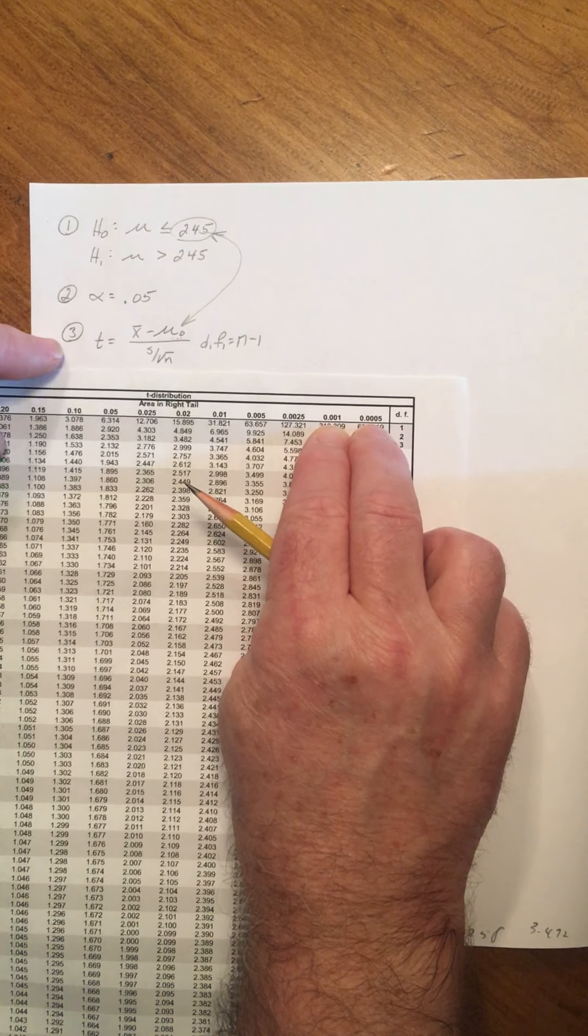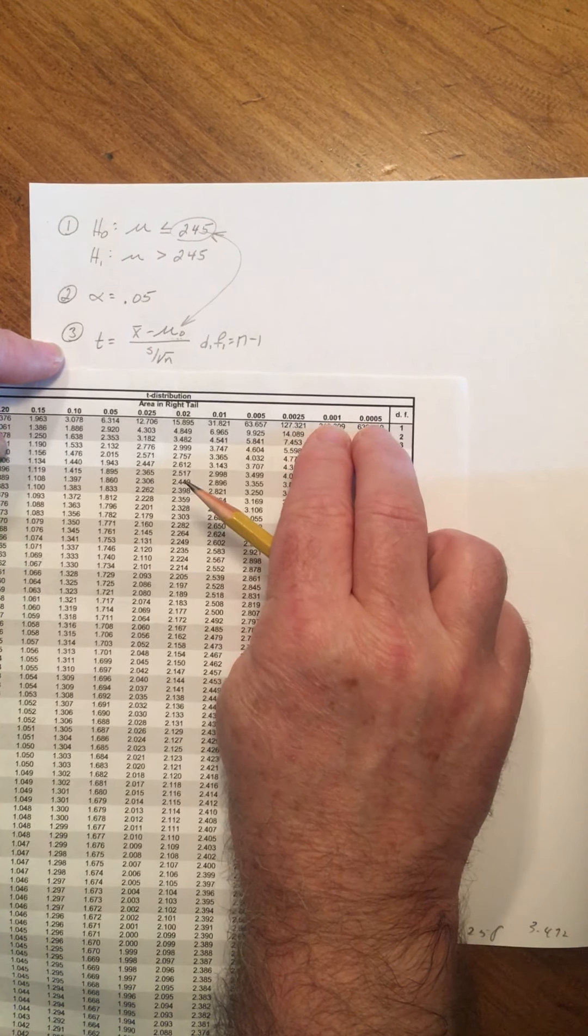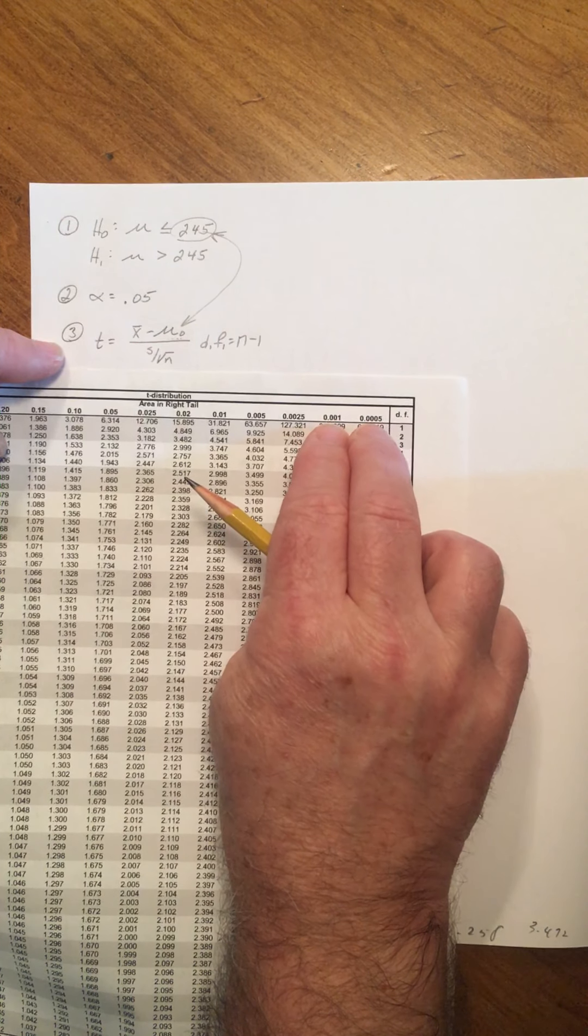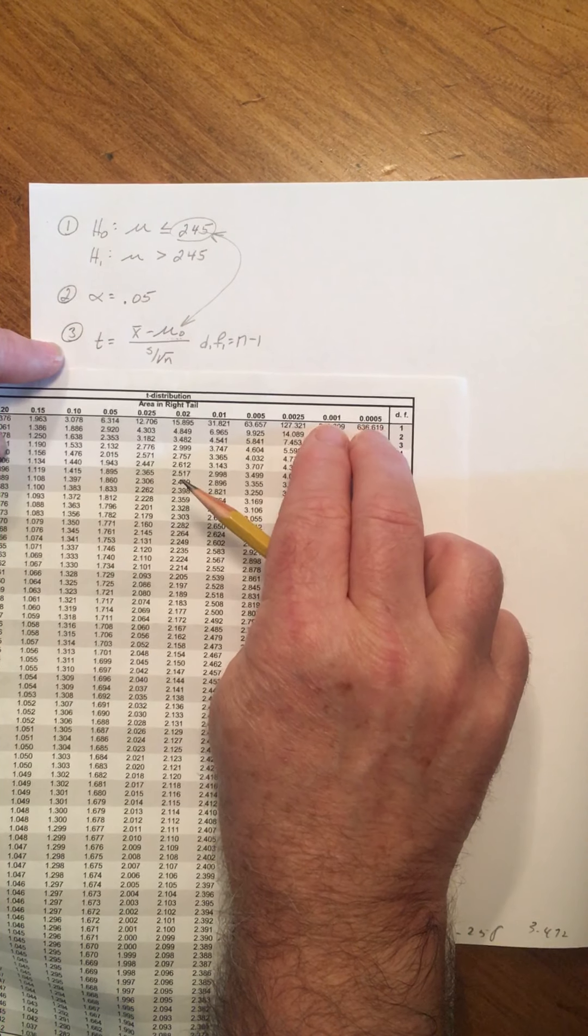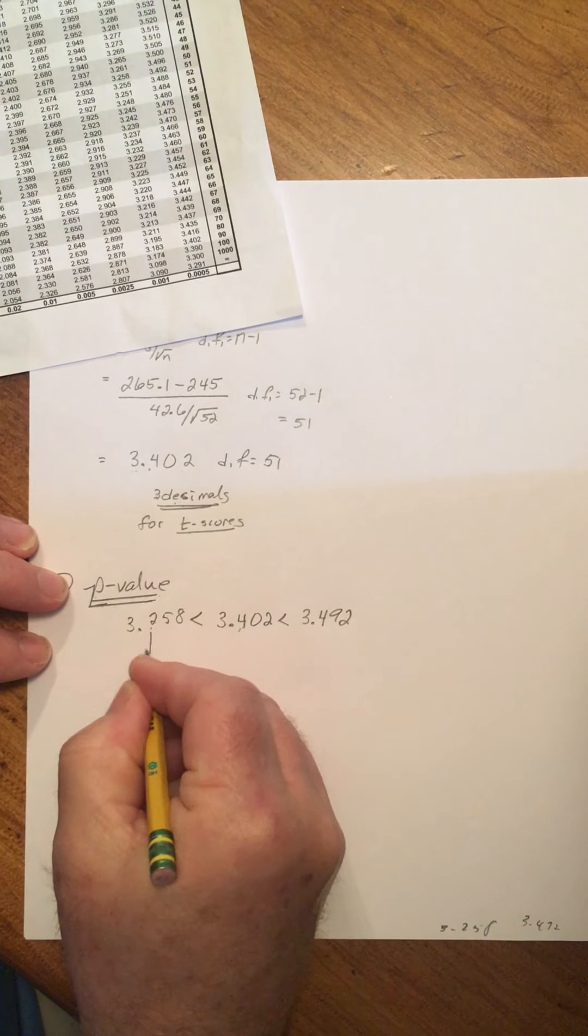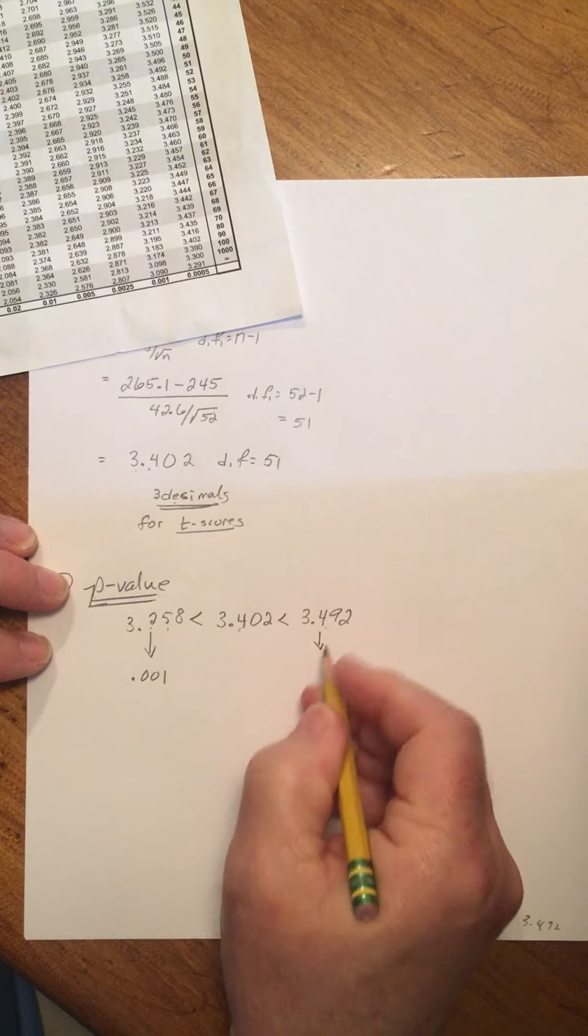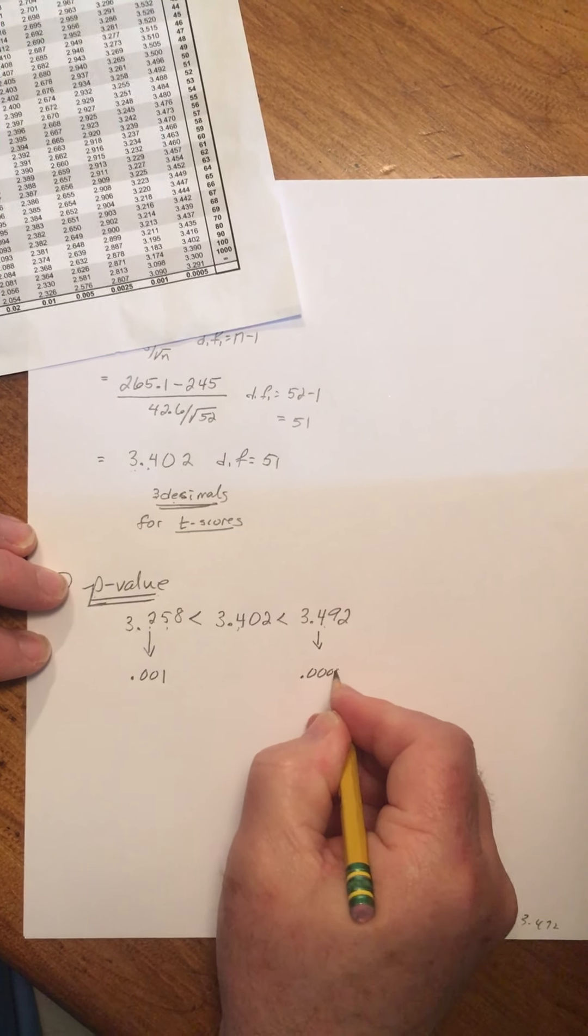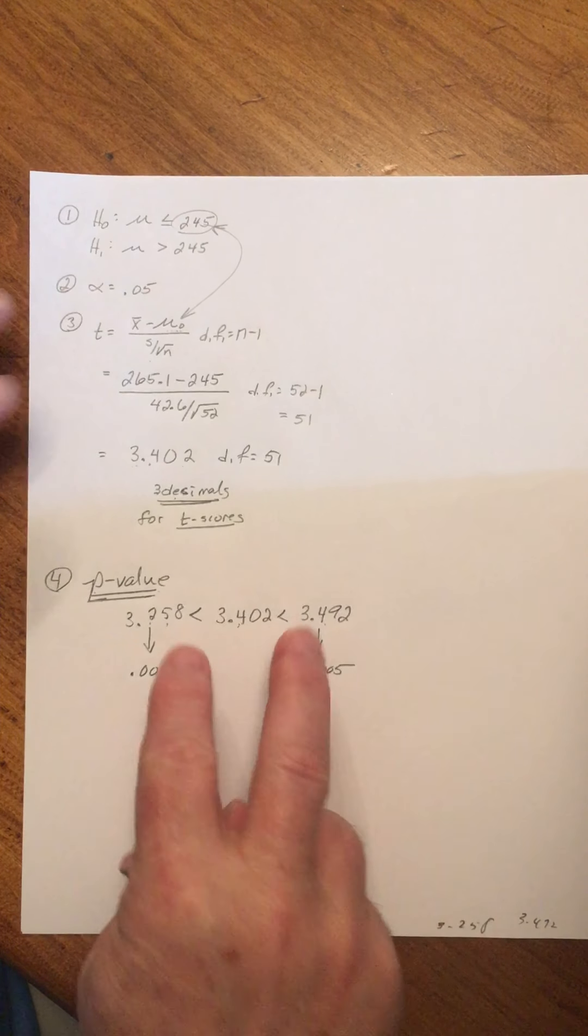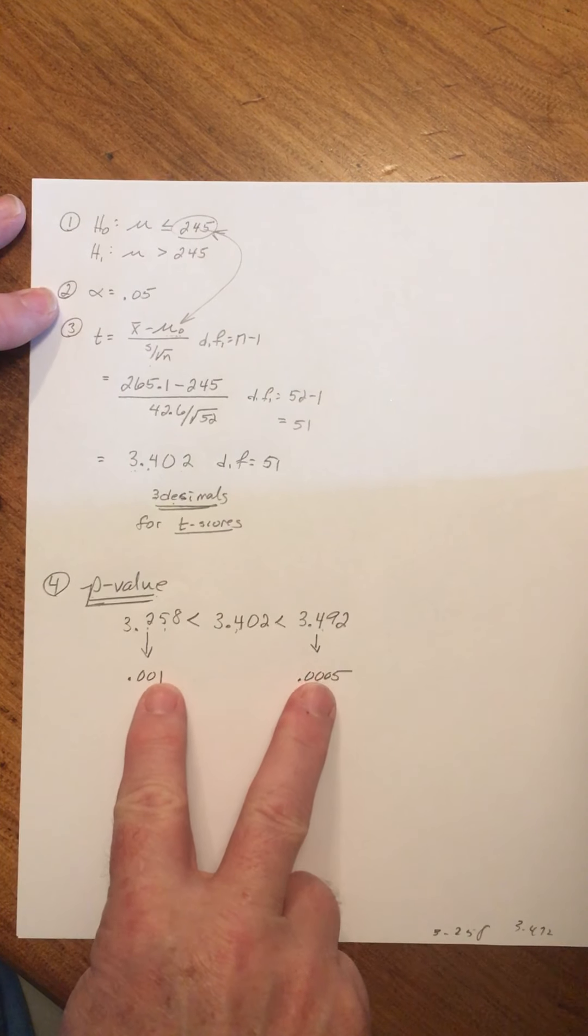This is .001. I'm not going to write down the zero in front of the decimal. .001 and .0005. So the number at the top of this column was .001. The number at the top of this column is .0005. That's all we need from the table.